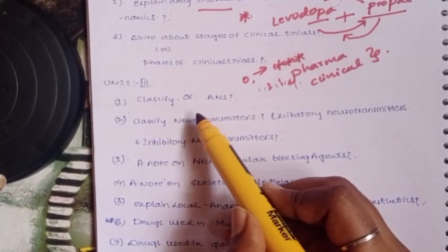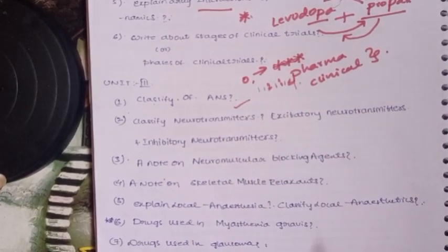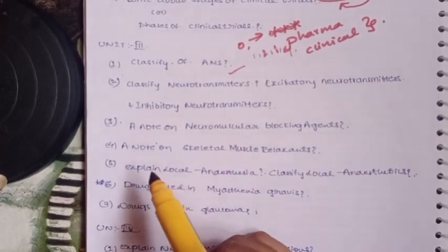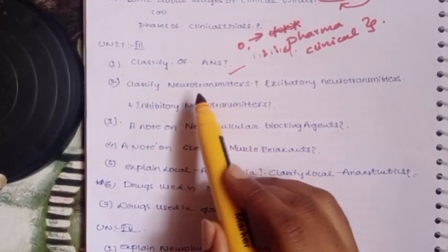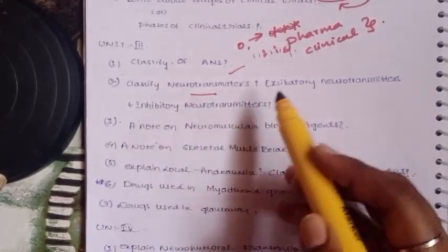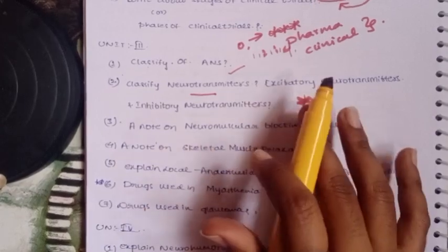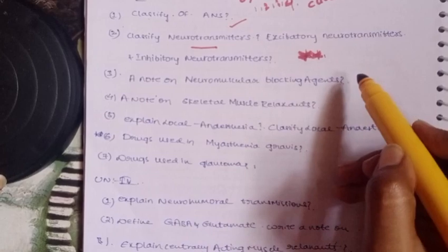Unit 3: Classify ANS - the autonomic nervous system. Classify drugs, classify neurotransmitters, classify excitatory neurotransmitters, and classify inhibitory neurotransmitters.